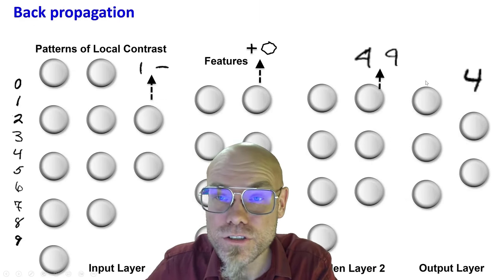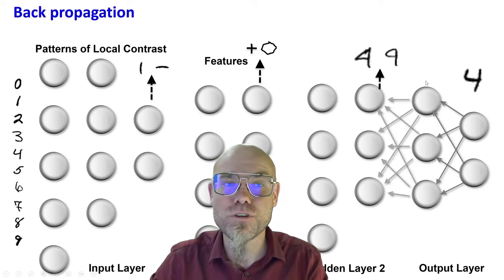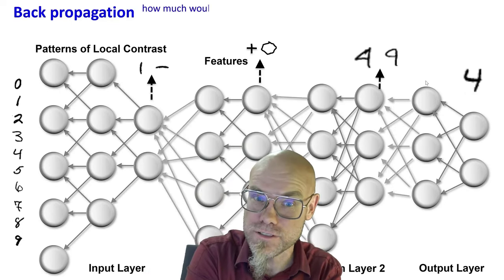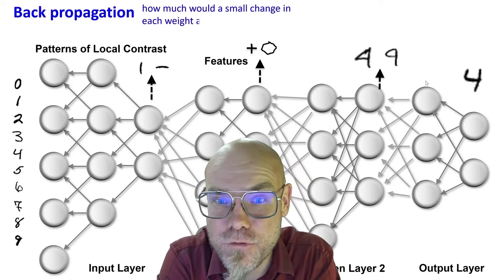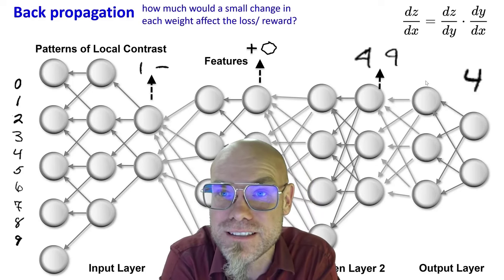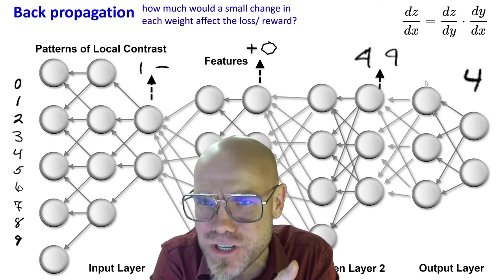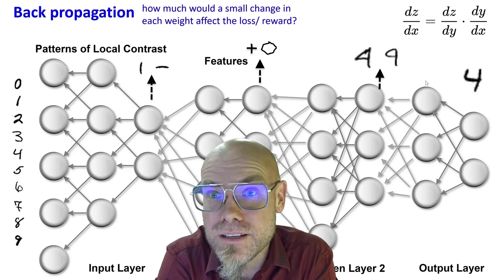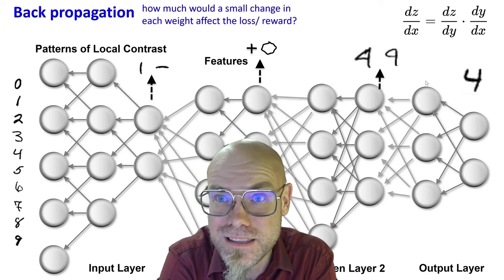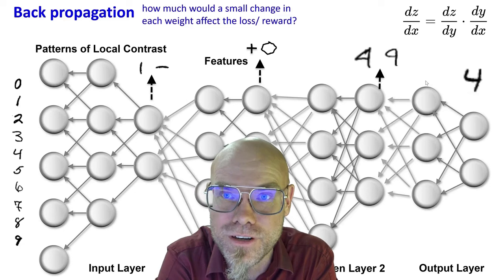And then what you do is you go backwards. So that's the back propagation algorithm, the famous back propagation algorithm that then goes backwards. And then basically calculates how much would a small change in each weight of these neurons affect the loss or the reward. That's the matching basically of the number with the four. And we do that with, I don't know if you recognize that equation here, but that's, yeah, that's a good old chain rule from calculus.